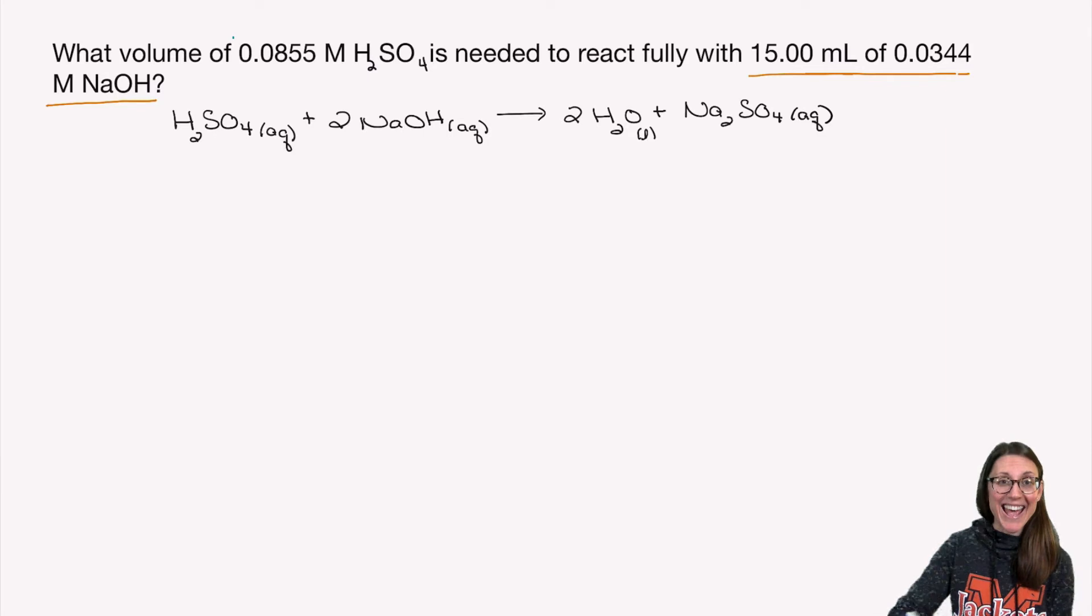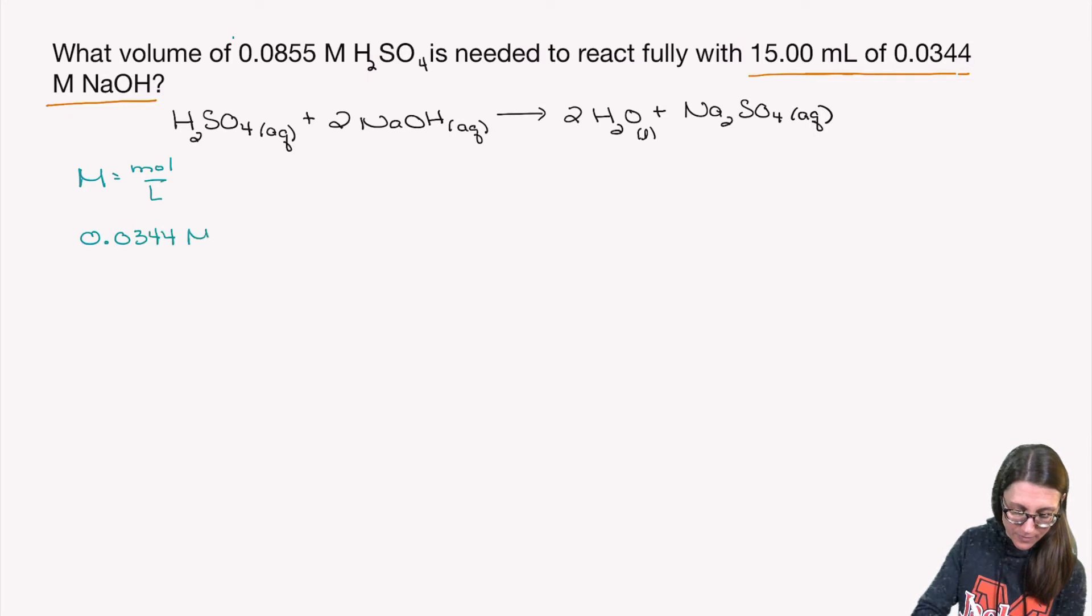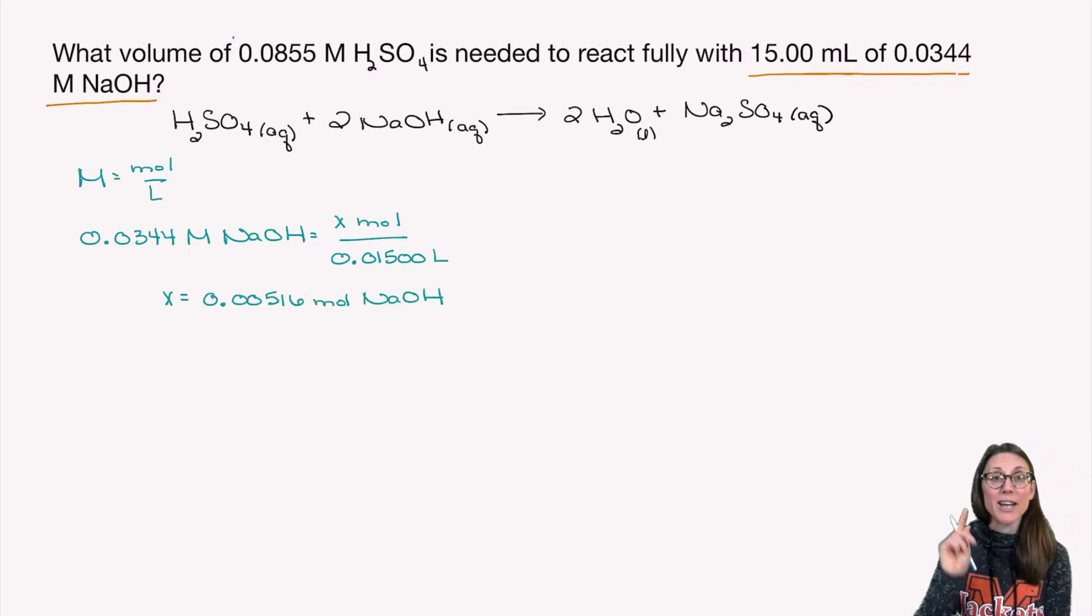We are going to take that and use our molarity equation to convert to moles. I do want to point out that the question gave us milliliters. When you use the molarity equation, convert it to liters first. So that 15 milliliters, that's 0.01500 liters. So I have 0.00516 moles of sodium hydroxide.